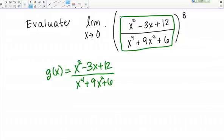That's my inner function. Now, what's my outer function? My outer function is this part here where I'm raising the rational function to the 8th power. If I wanted to write that, I would write it as X to the 8th.